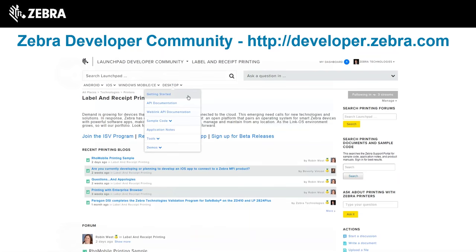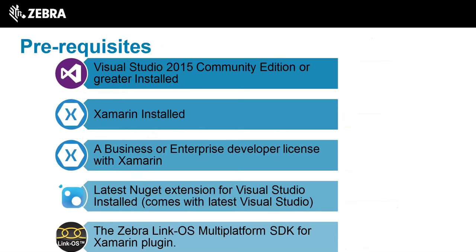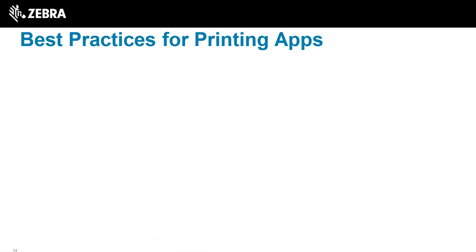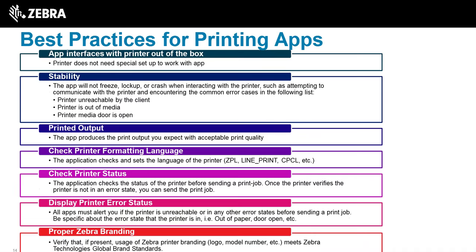To use the Xamarin SDK, you need a few things on your system: Visual Studio is the base platform Xamarin builds off of, so make sure you have that. You'll also need Xamarin with a license to compile, and NuGet — which comes with Visual Studio — because that's how you pull in the Zebra Link OS plugin.